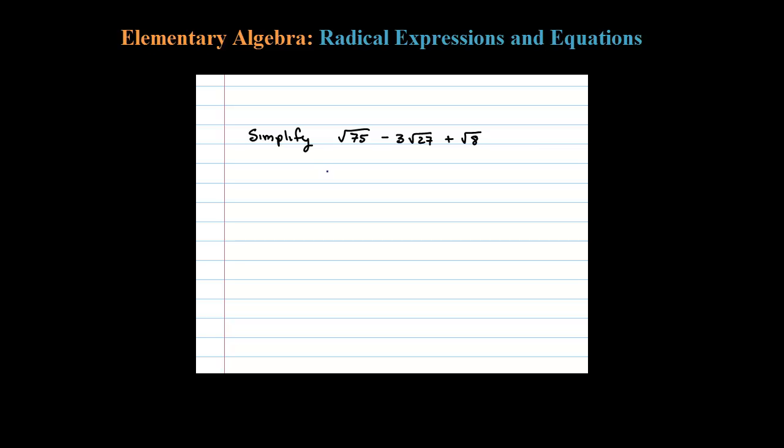Here we're asked to simplify this expression. When you do these, you want to look for the largest perfect square factor of those numbers. So 75, I'm going to rewrite that as 25 times 3, minus 3 times square root of 27. 27 can be written as 9 times 3, and 8 can be written as 4 times 2.